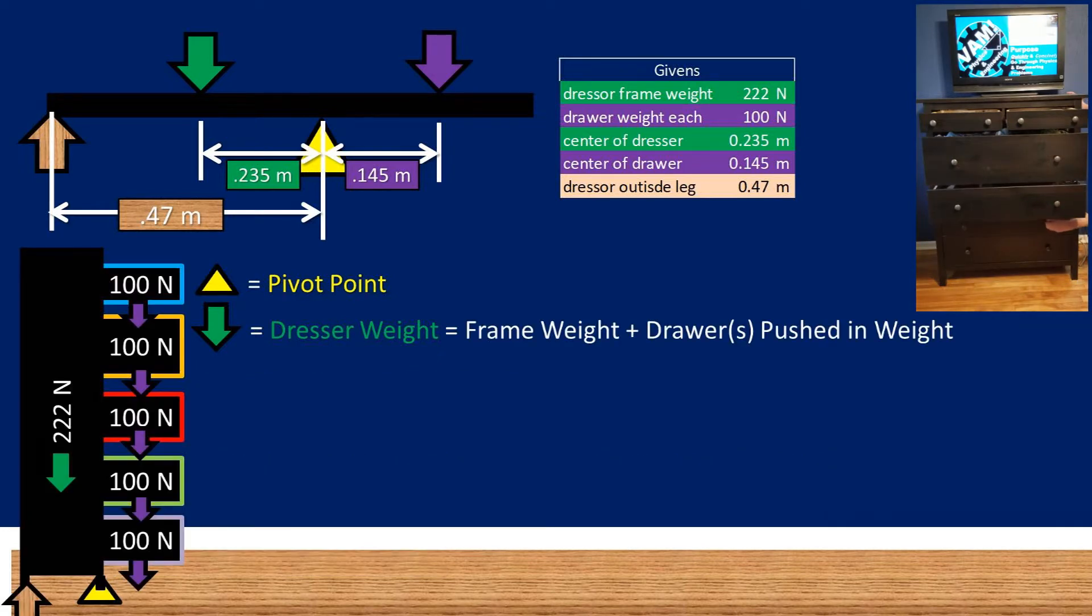Let's begin with the dresser weight, which is defined as the weight on the left side of the pivot point. You might be thinking it is 222 newtons, but in reality, it is actually the frame weight plus the weight of all the drawers that are pushed in. We will be assuming that the center of the mass on the dresser weight on the left side of the pivot point does not change when you push or pull out drawers.